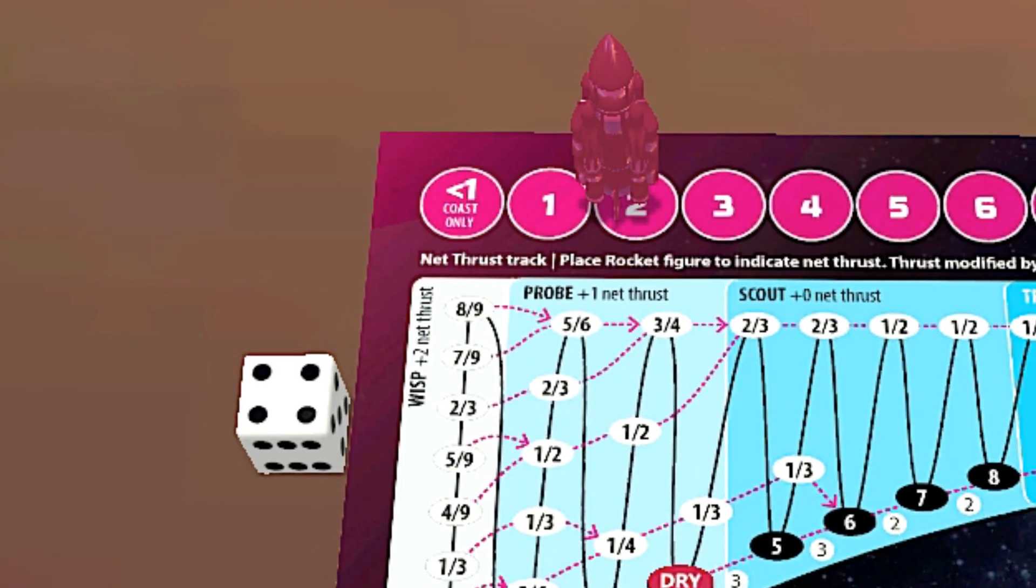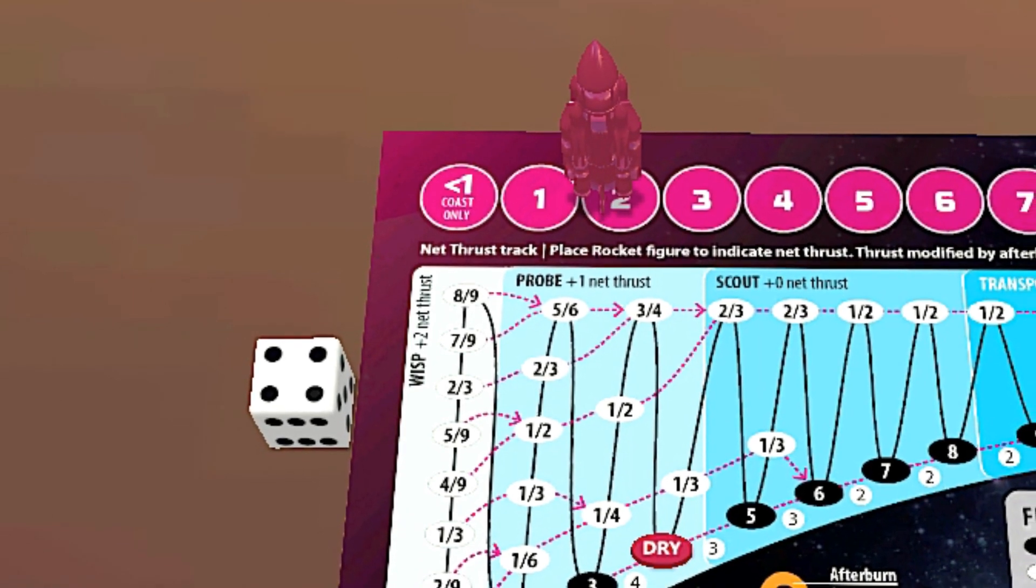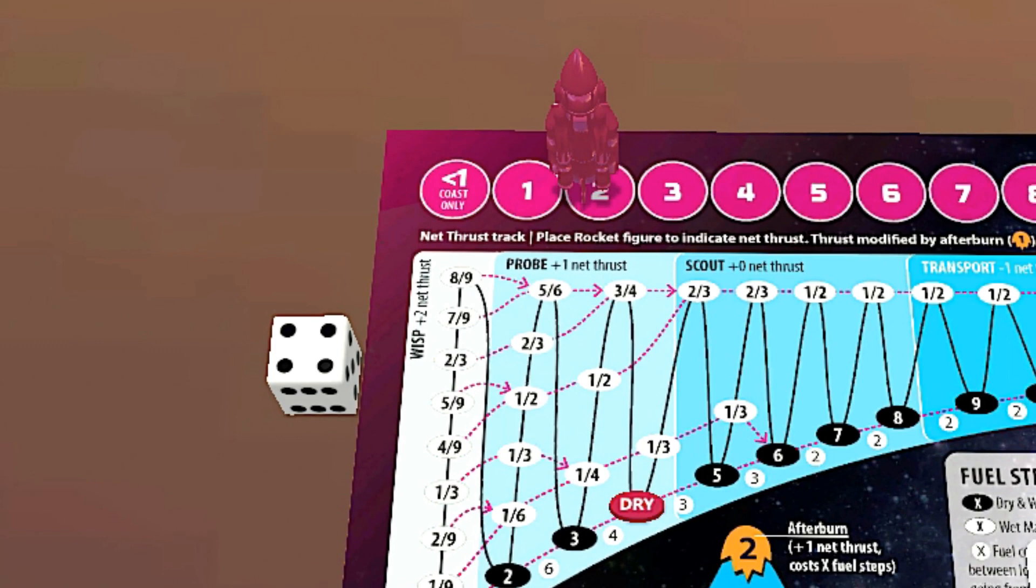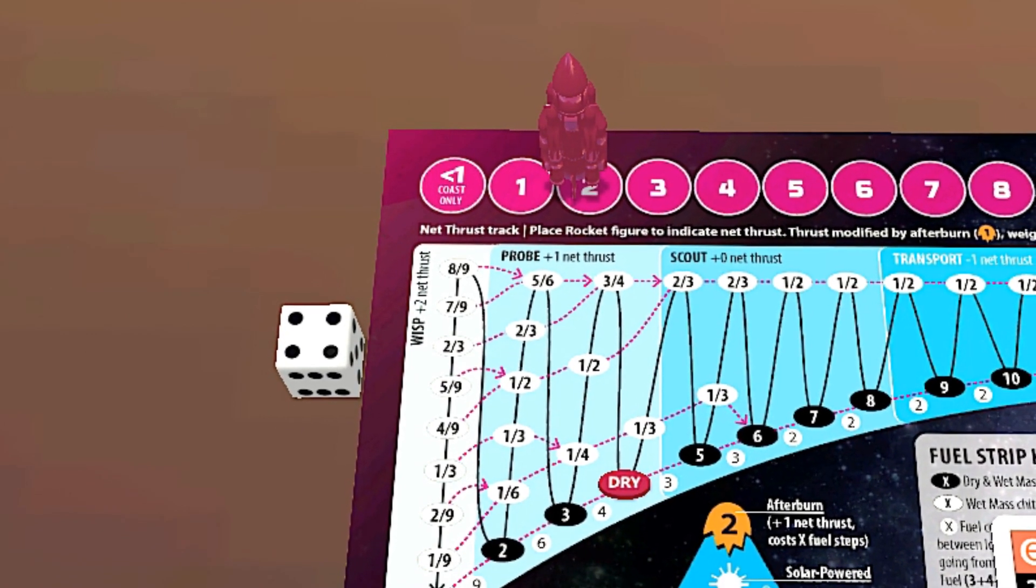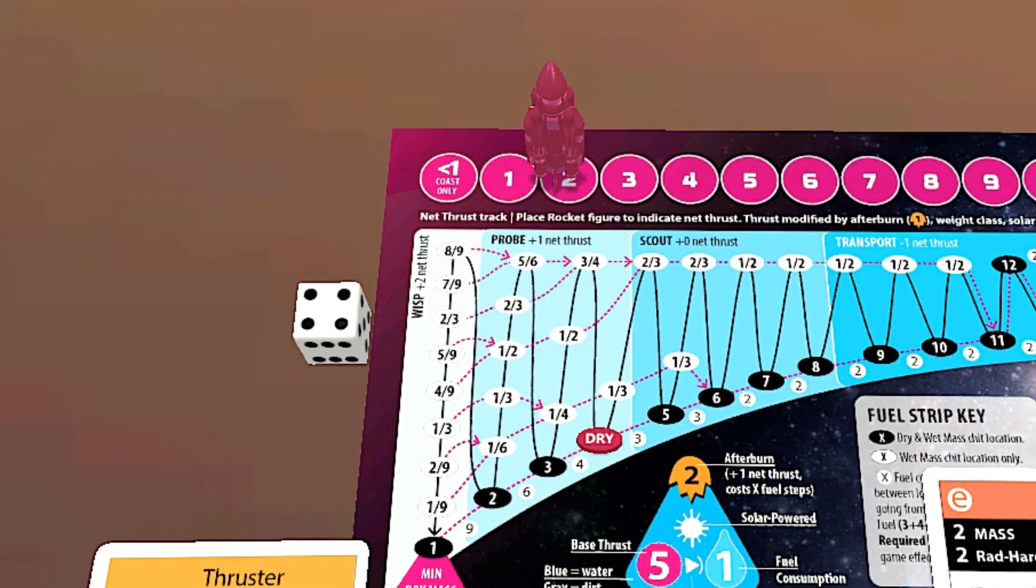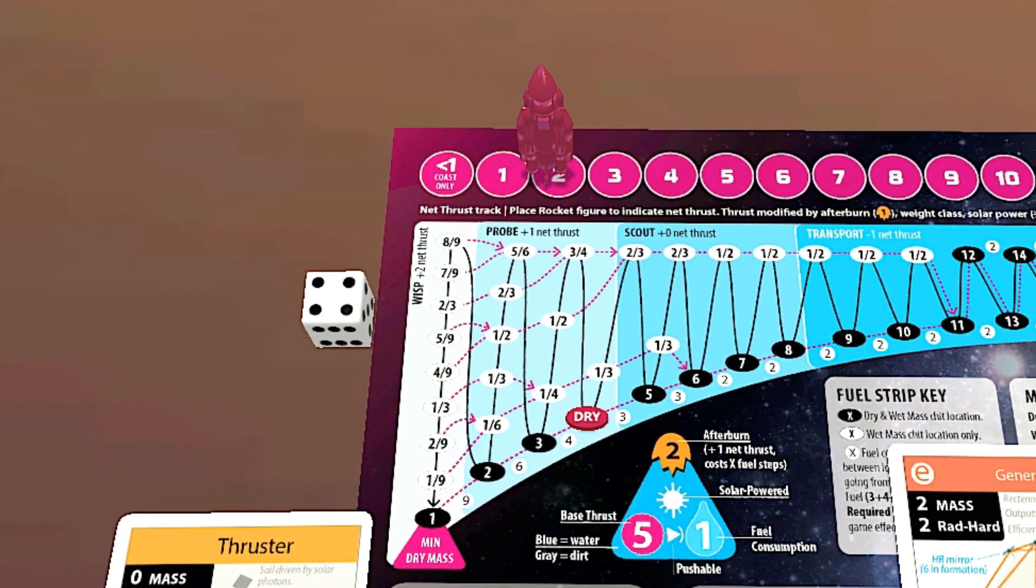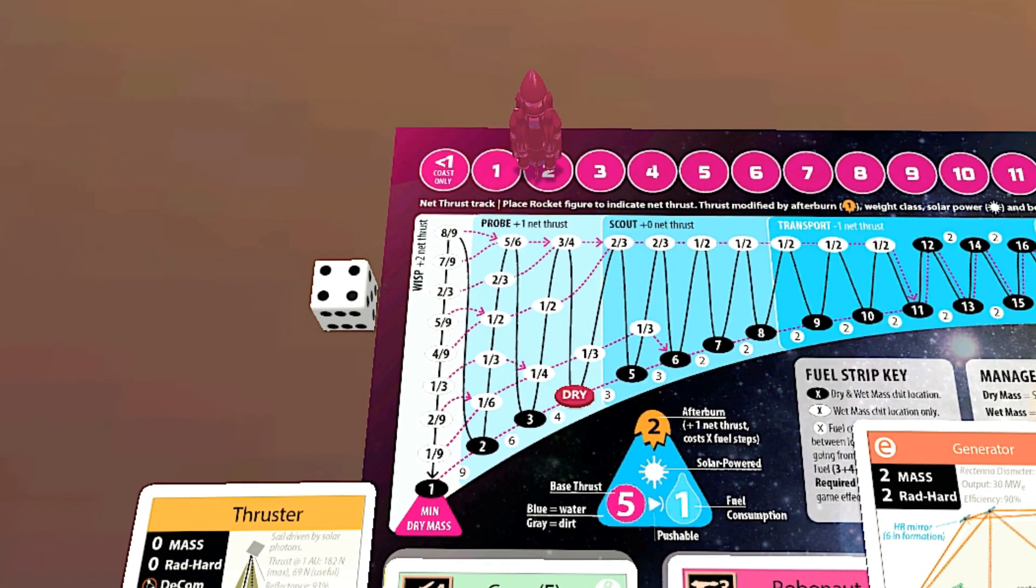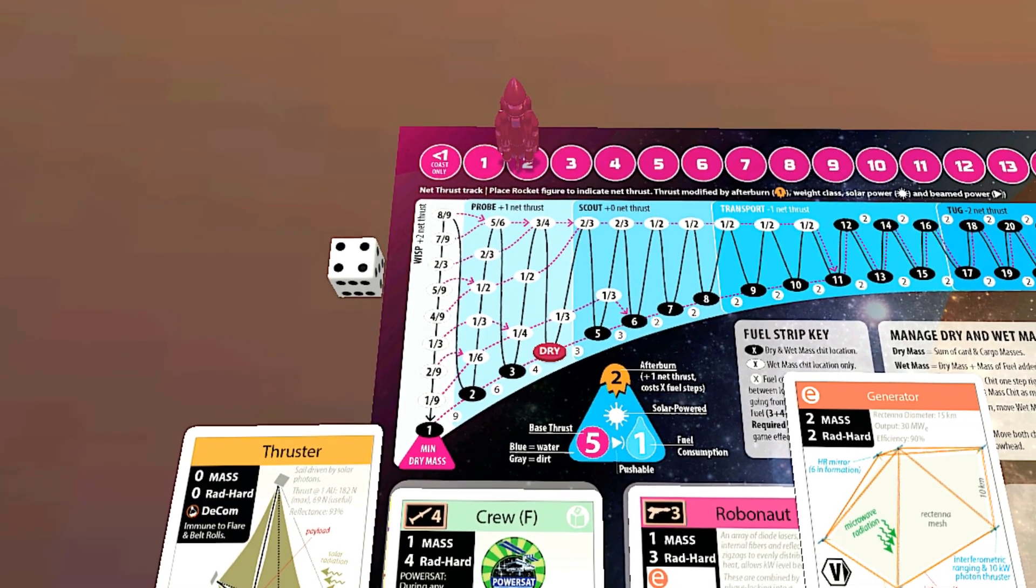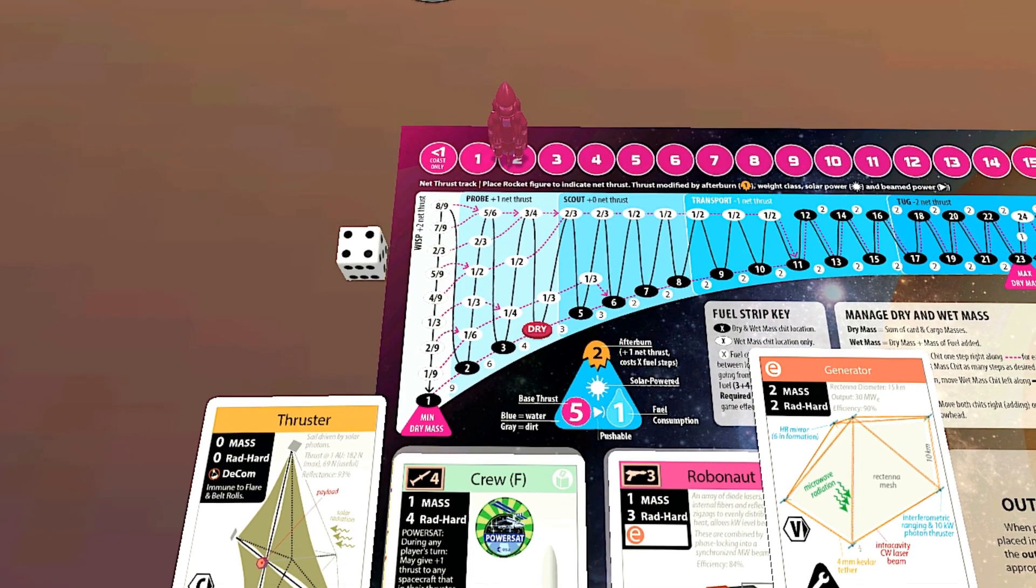The photon kite sail is immune to the radiation, but the other items have to make a belt roll. I roll a four. My net thrust is two, which is subtracted from the die roll, so my net result is two. The faster you're moving, the less exposure you have to the radiation, and that's reflected by that modifier. With some hazard checks you can also pay the programmers for aquas to make sure that failure is not an option and avoid the hazard rule. However, belt checks are immune to that.